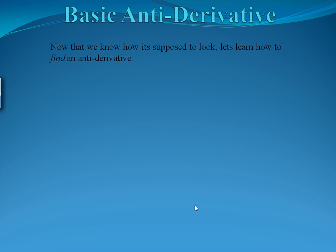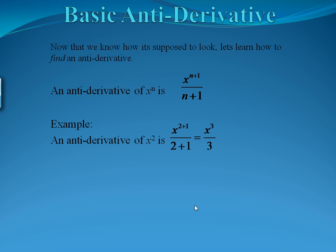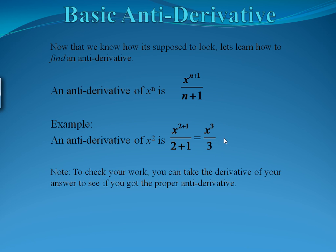Now that we know how it's supposed to look, let's learn how to find these antiderivatives. If you have x to some power of n, then our antiderivative is calculated by adding 1 to the power and dividing by that new power. For example, to find the antiderivative of x squared, we add 1 to the power so it becomes 3, and divide by the new power. So our antiderivative is x cubed divided by 3. We can check by taking the derivative: the 3 comes down, cancels with the 3 on the bottom, subtract 1 from the power, and we're left with x squared — our original function.